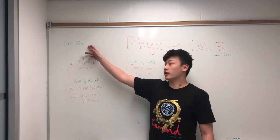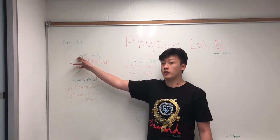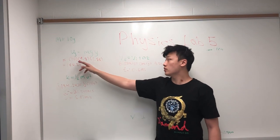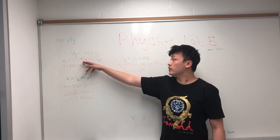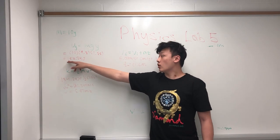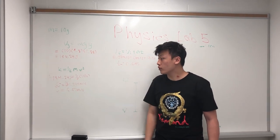The mass of the wallet is 10 grams. This is the formula for gravitational potential energy, which is mass times gravity times the distance it falls. So the mass is 10, gravity is 9.8, and the distance is 1.88 meters. This gives you a total of 184.24 joules.